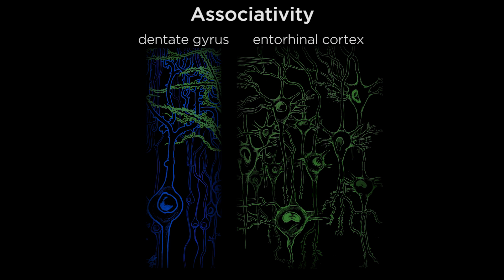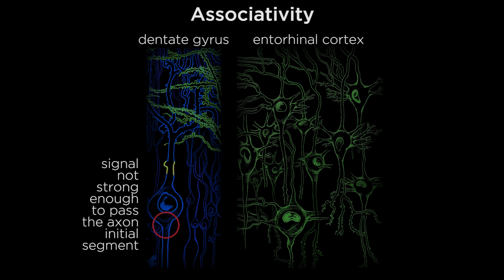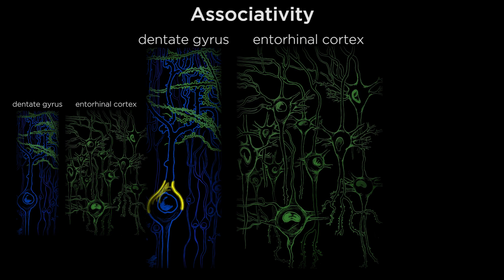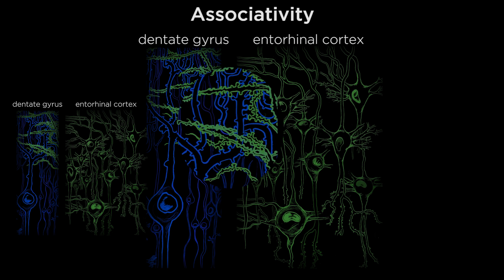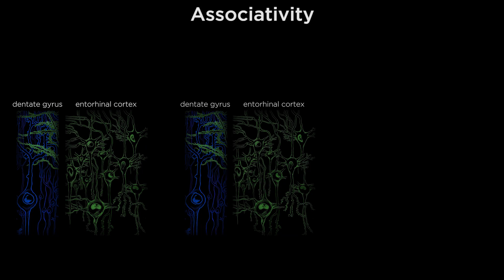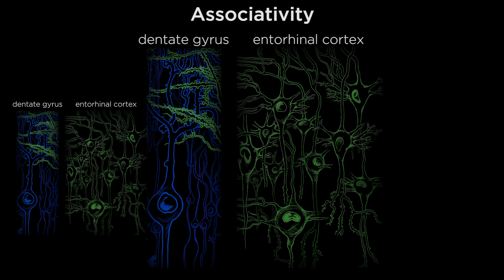Associativity is roughly analogous to cooperativity. However, in this case, the activated cells are spatially separated. Similar to cooperativity, activating a small number of cells or synapses is not enough to produce a postsynaptic response. However, if you stimulate the synapses of two separate sets of cells that converge on the same cell, where one of them already has strong synapses with the postsynaptic cell, their joint activation will produce LTP of the postsynaptic response. In future trials, the postsynaptic cell, having become potentiated, will predictably fire an action potential in response to an incoming signal from either of the two associated cells.